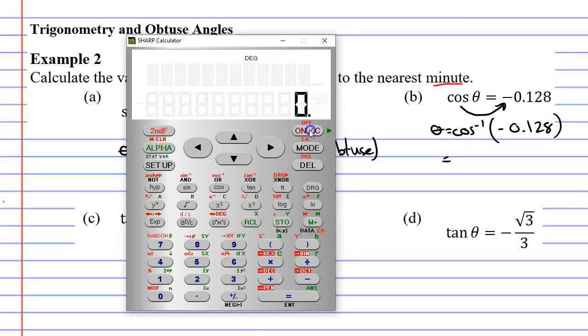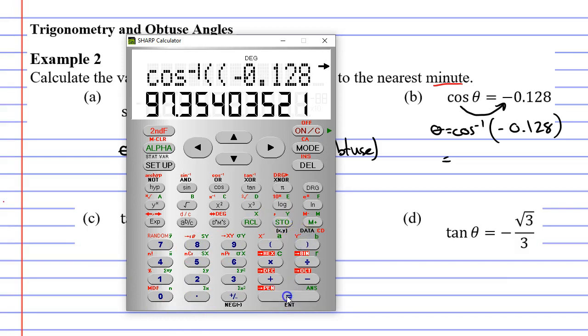Bringing up our calculator, second function cos, open our brackets, negative 0.128. Close our brackets, equals, and we get a decimal here, 97.354 degrees. We need to do it correct to the nearest minute. So we go second function DMS, giving us 97 degrees and 21 minutes. Remembering to check our seconds. Our seconds are less than 30 seconds, so we're not rounding up. So we're quite happy with 97 degrees, 21 minutes.